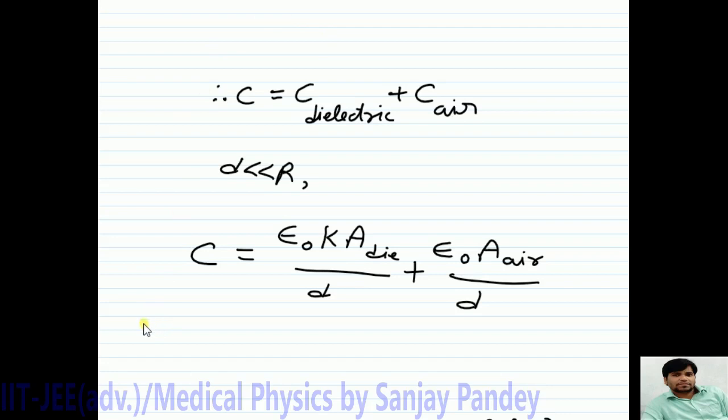Now, A dielectric is equal to 2 pi R into X. R is the average radius of electrodes and A air is equal to 2 pi R into length of cylindrical part. It is L minus X.